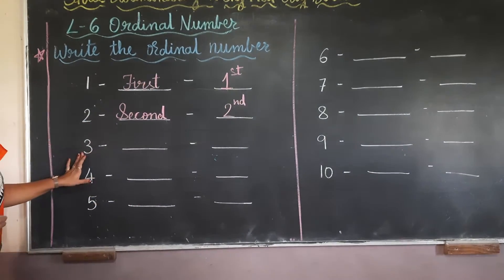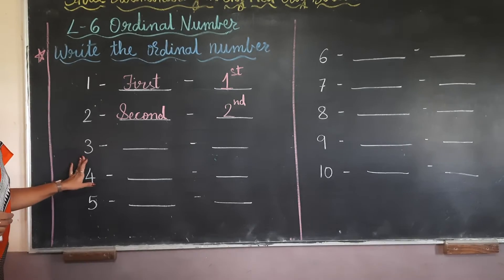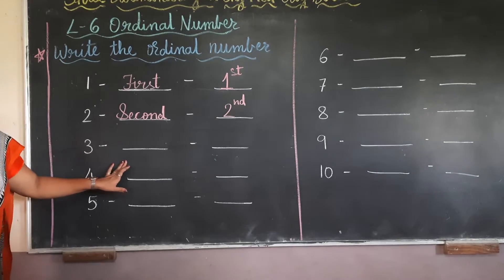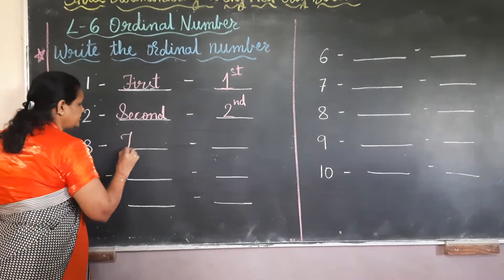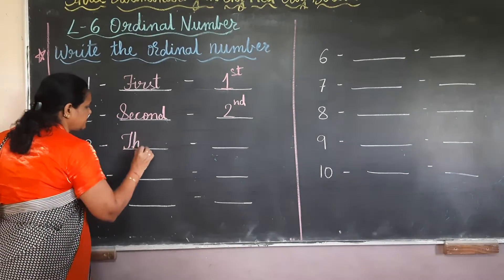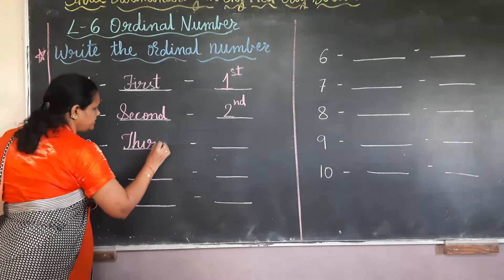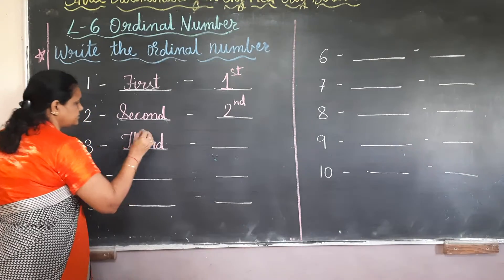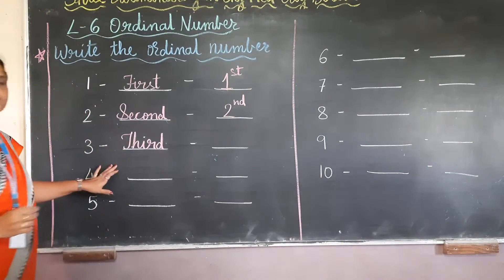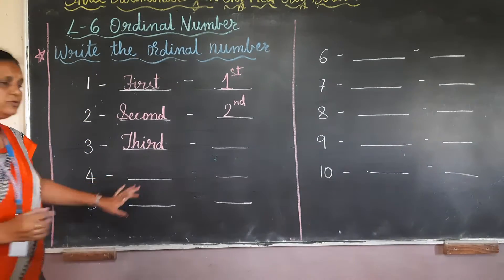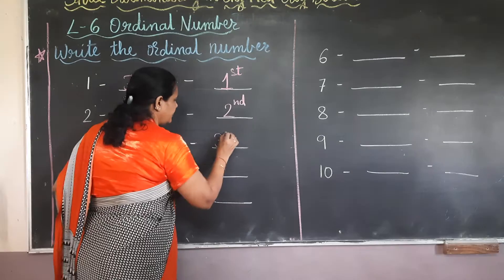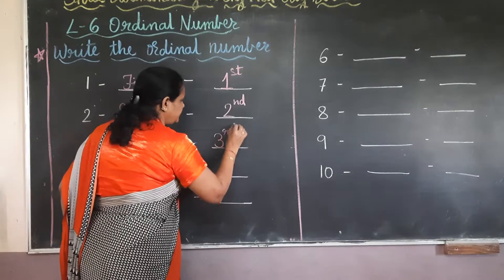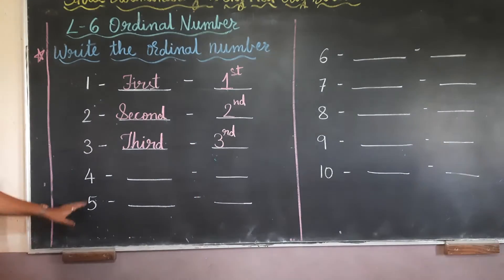For 3rd position, we will say 3rd position. The spelling is T, H, I, R, D — third. And in the short form, we write 3 and RD.